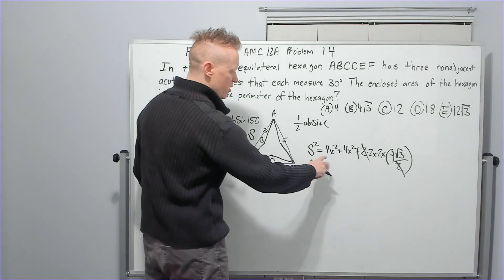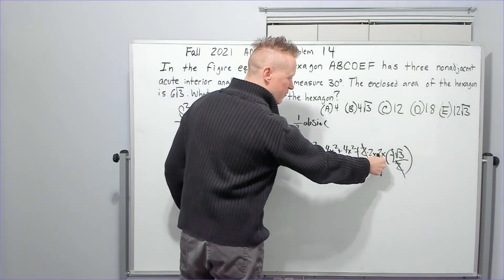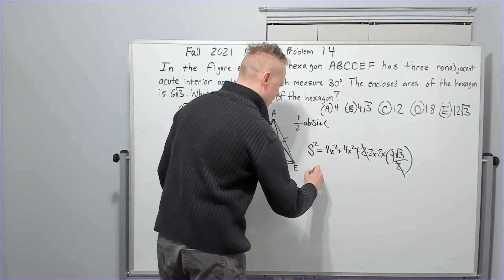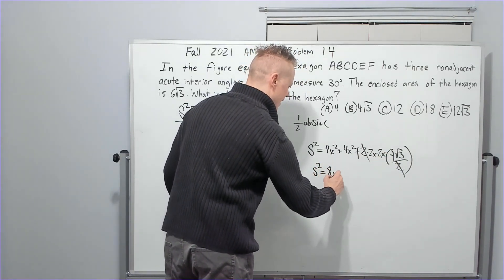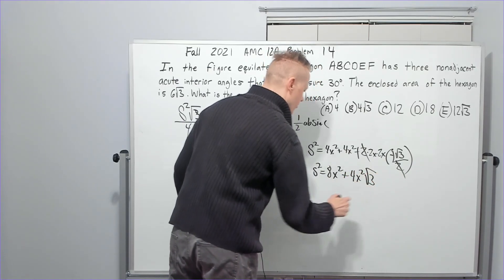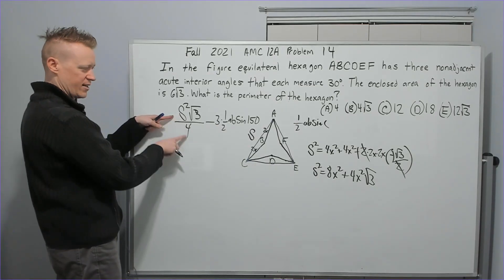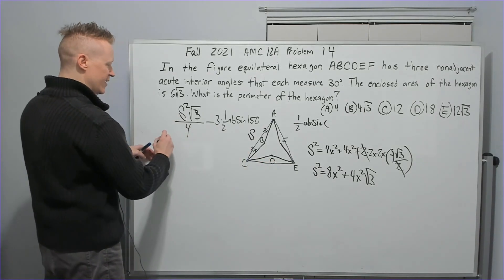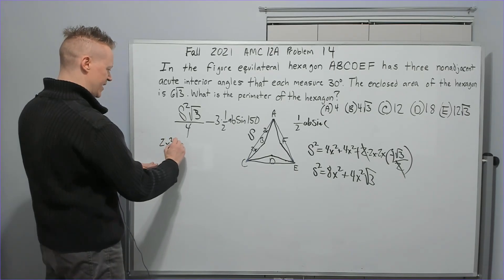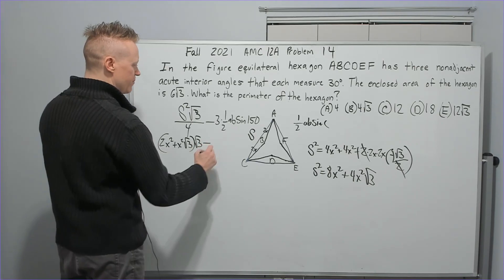So, what do we got? S squared is going to be 8X squared. This is a plus sign now with 4X squared root 3. So I've got S squared is 8X squared plus 4X squared root 3. Great. What do we do with that? We're going to drop it right here in S squared and divide by 4 immediately to get 2X squared plus X squared root 3.